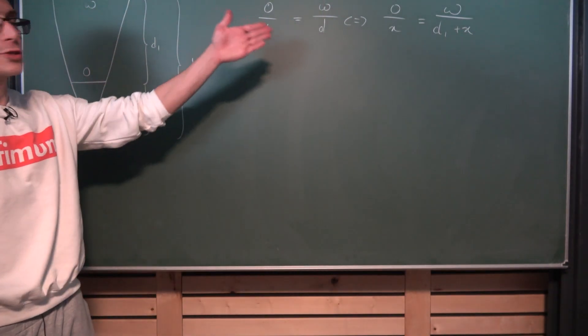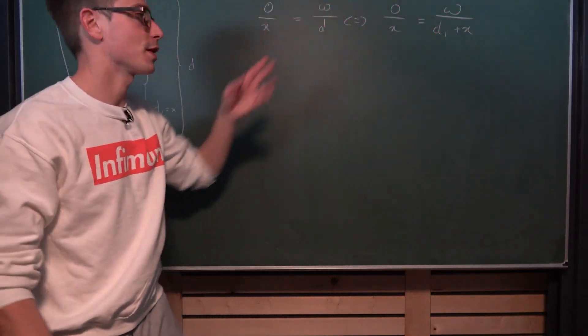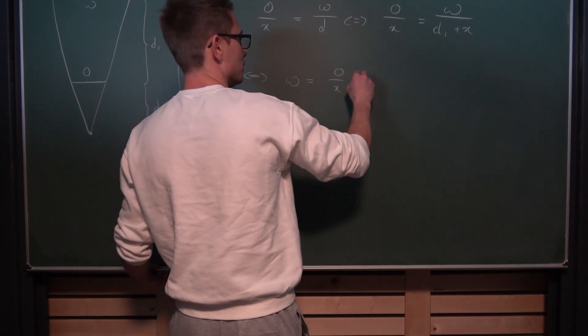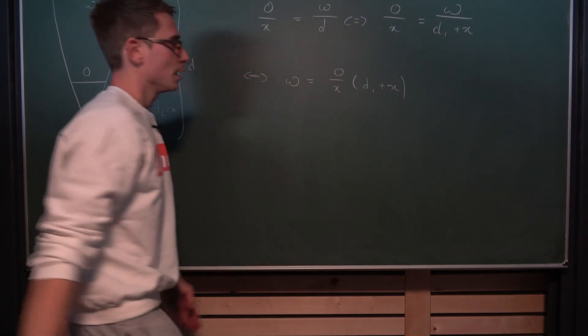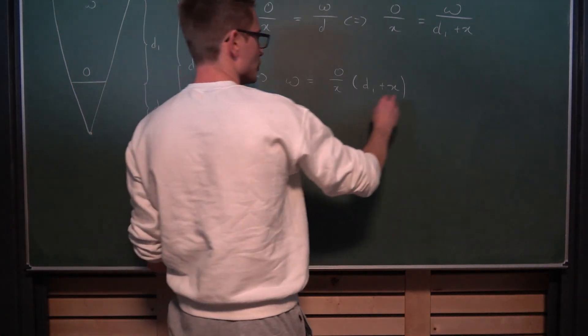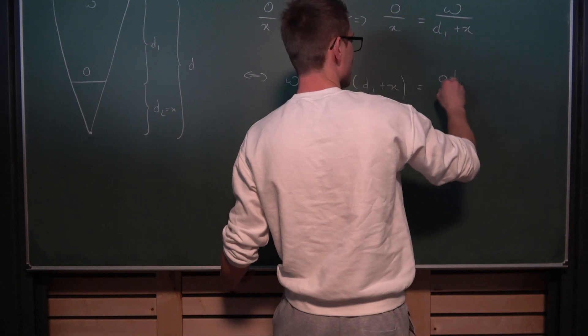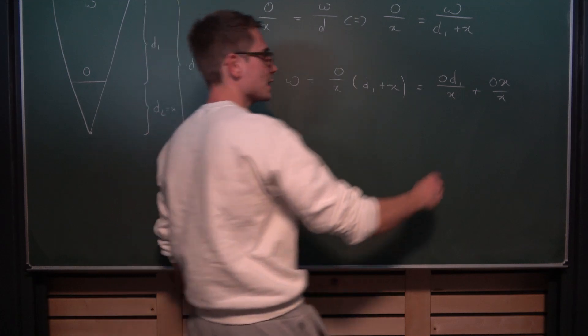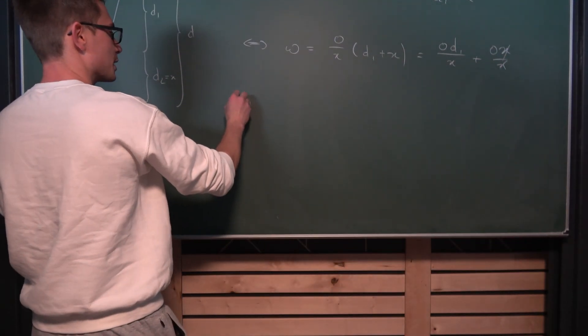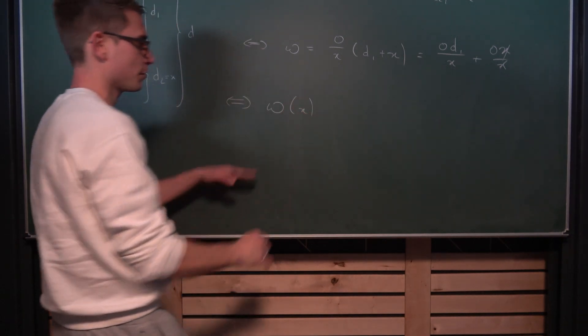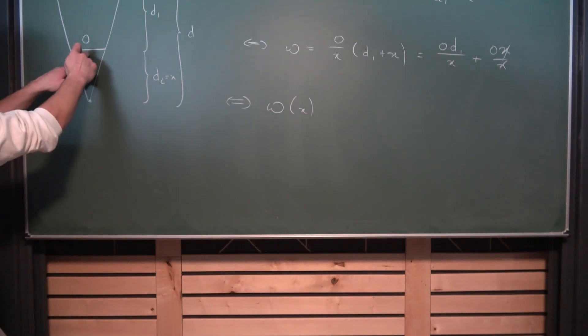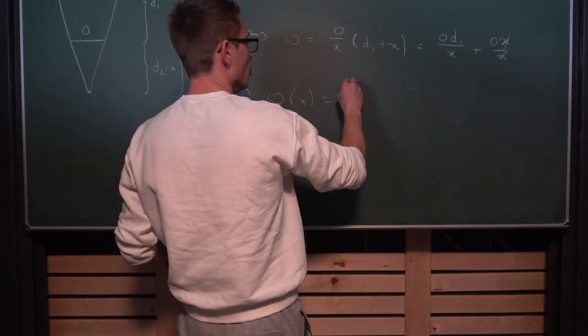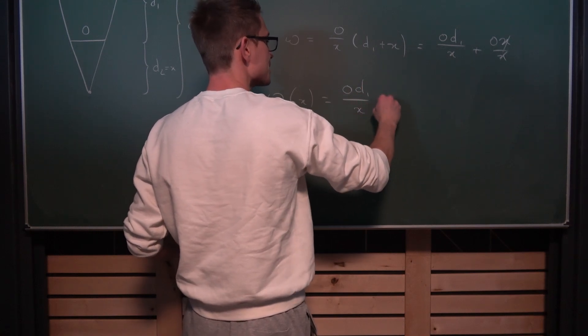And now we can solve for our W because this is a function with respect to x. Our W is hence nothing other than O divided by x times D1 plus x. And now we can solve all of this. If we distribute everything we get O times D1 divided by x plus O times x divided by x. Now x and x is going to cancel out here. Meaning what we are going to get overall is the function W, the width of our shadow with respect to the distance between our object and the light source. It's defined as O times D1 divided by x plus O. And this right here is a hyperbola.